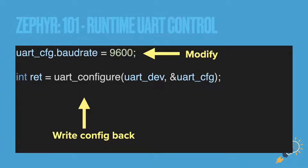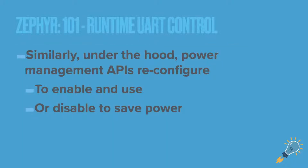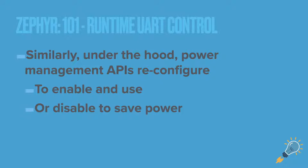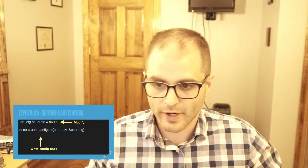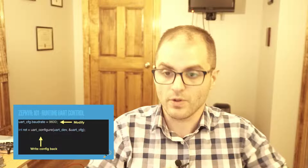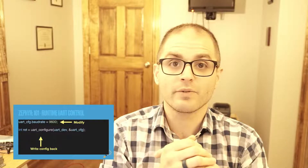Here's the setting of the baud rate — we're setting it to 9600 — and then reconfiguring using uart_configure. That will set the configuration back to the device and reconfigure it however you want. In this case, we're just changing the baud rate. So that's the basics of configuring devices at runtime.